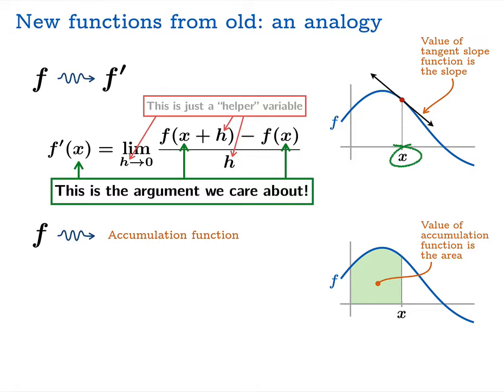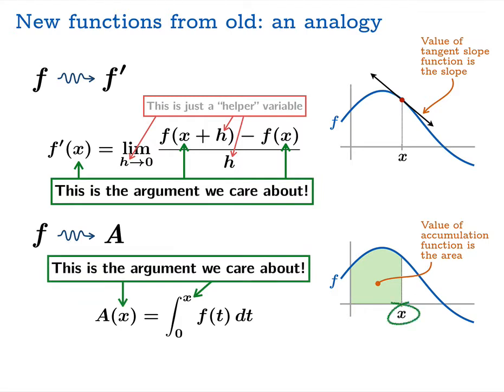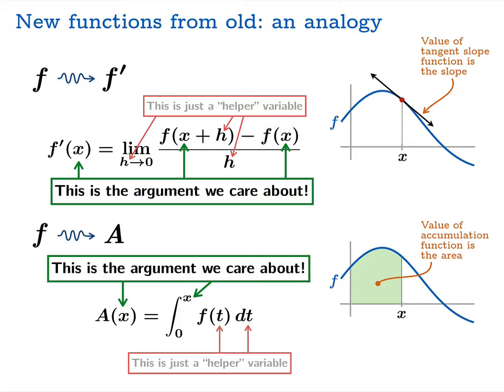Unfortunately, there's no standard notation for accumulation functions, so we're just going to call this function a. There is a well-defined way of calculating this: since we're looking for a signed area, we need a definite integral. So we evaluate a(x) by integrating the function f on the interval from 0 to x. Notice that x is the argument we care about — you change x and you change the signed area. But there's another variable floating around in this formula, t, and we can think of that as just a helper variable. Its name is irrelevant; we could call it u, w, or not even give it a name. What's really going on: the variable to keep your eye on is x, because that's the one that determines the value of the function.